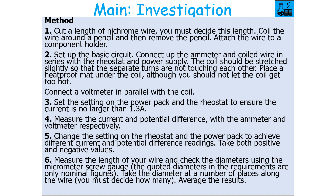Measure the current and potential difference with the ammeter and voltmeter respectively. Then change the settings on the rheostat and power pack to achieve different current and potential difference readings, taking both positive and negative values. You would then measure the length of your wire and check the diameter using the screw gauge micrometer, taking measurements at a number of places along the wire and averaging the results.